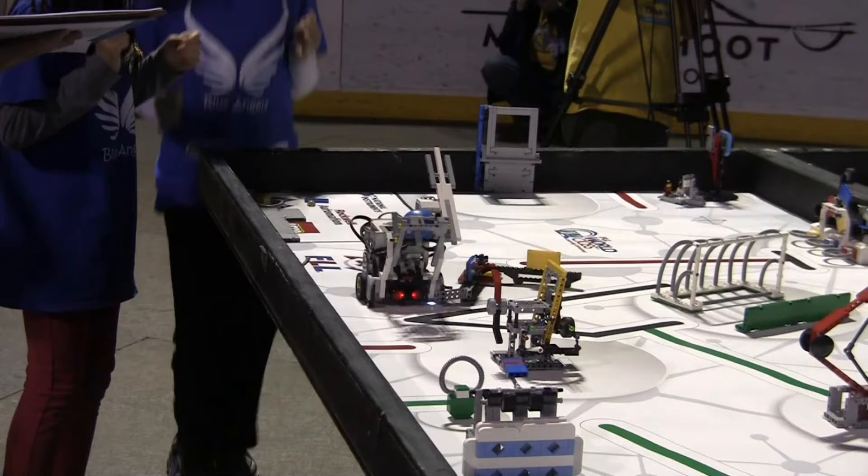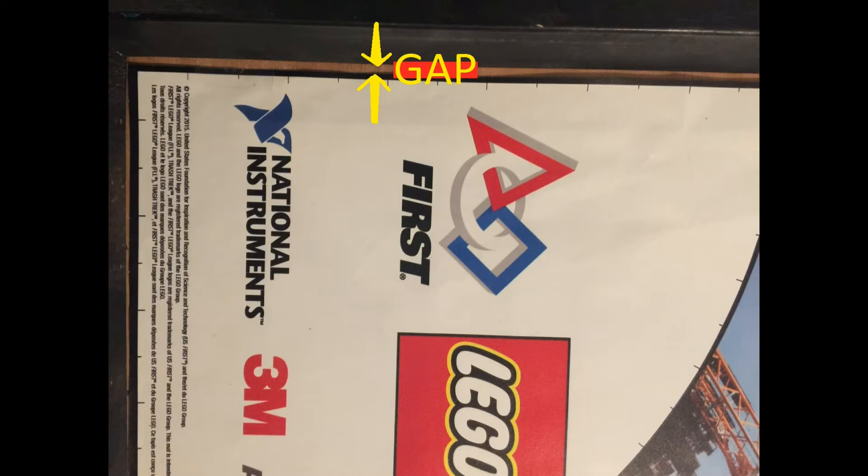In previous seasons, we used a jig to help on the starting position. One thing you need to consider is that the gaps between the map's edge and the table wall can be different between your table and the competition table.